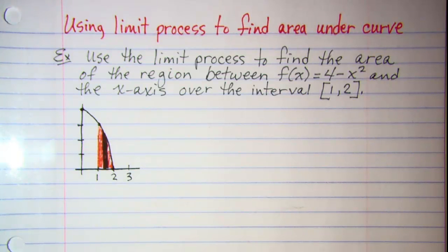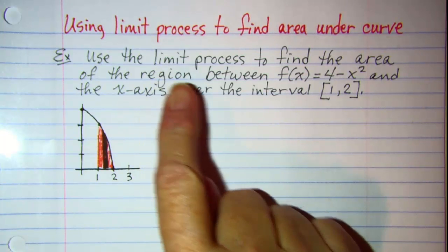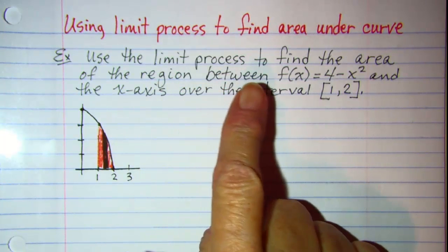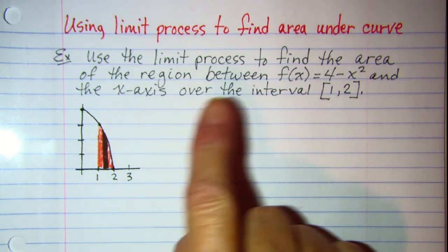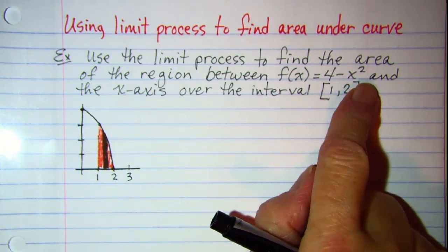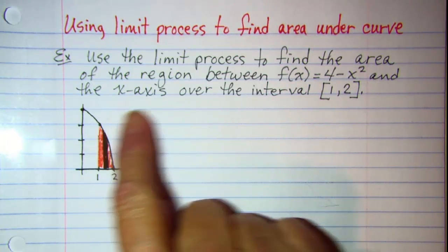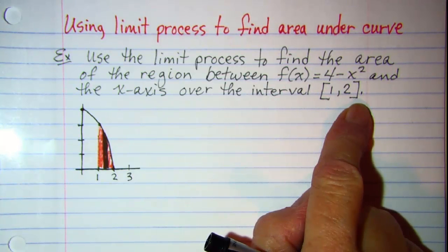In this video we'll be using the limiting process to find the area under a curve. The example we'll be working with is: use the limit process to find the area of the region between f of x equals 4 minus x squared and the x-axis over the interval from 1 to 2.